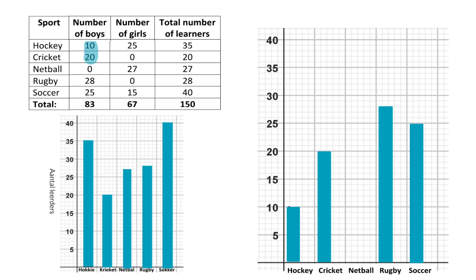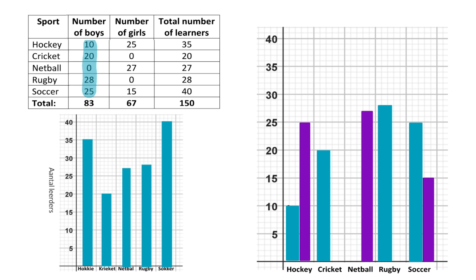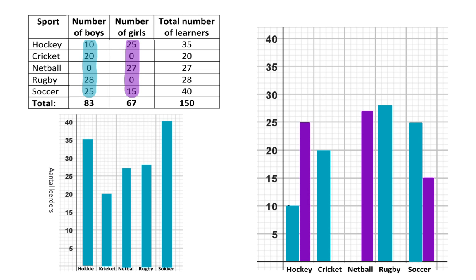I've already indicated the number of boys participating in the respective sports, and now I'm going to add the girls. The blue bars represent the boys and the purple bars the girls. Now we can see that two sports were represented by boys and girls — hockey and soccer. For these two sports, the bars are right next to each other, but there are still spaces in between the different sports. Focusing only on the blue bars, we can conclude that rugby was the most popular for the boys, and for purple, netball was most popular among the girls. Using our previous bar graph, for all learners, soccer was the most popular and cricket was least popular.